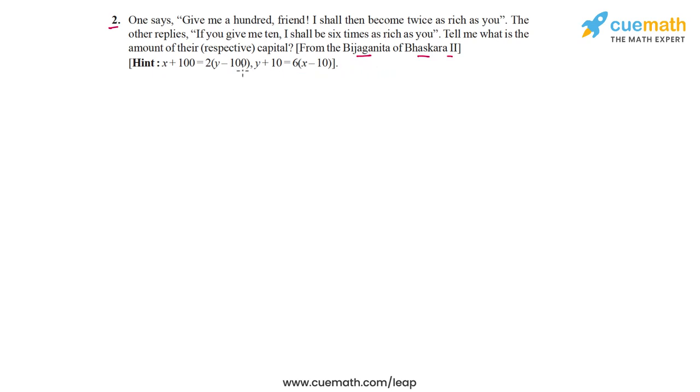Now here's what the problem statement says. It's a conversation between two friends. One says, give me a hundred friend, I shall then become twice as rich as you. Then the other one replies, if you give me ten, I shall be six times as rich as you. Tell me what is the amount of their respective capital.